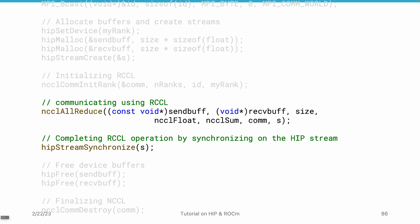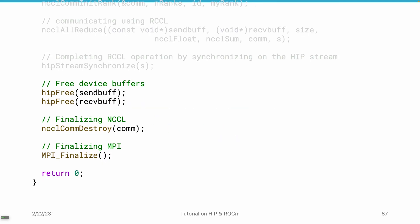Moreover, this API has been highly optimized for AMD platforms and different types of AMD connections. If you are using different interconnects, you are likely to achieve good performance without changing the implementation of your program. At the end, we free up the environment, destroy the communicator, and finalize MPI.